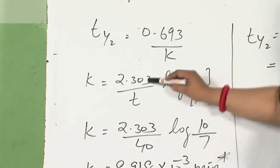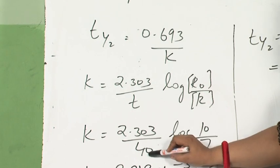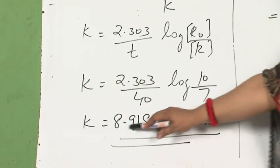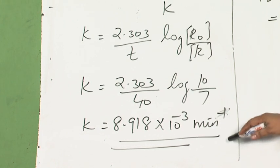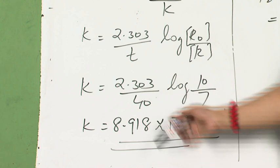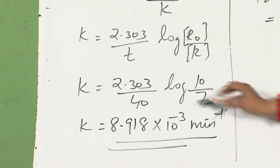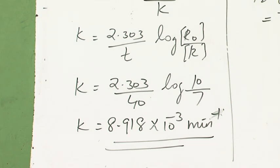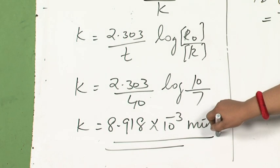From this expression, k equals 2.303 over t. t is 40 minutes, so I am writing it as 2.303 over 40 log 10 upon 7. You will write k in minute inverse. I didn't convert it to seconds. Why calculate more? Convert it into minutes so it is minute inverse. As I have derived, the units of first order reaction are second inverse; we have derived minute inverse also.